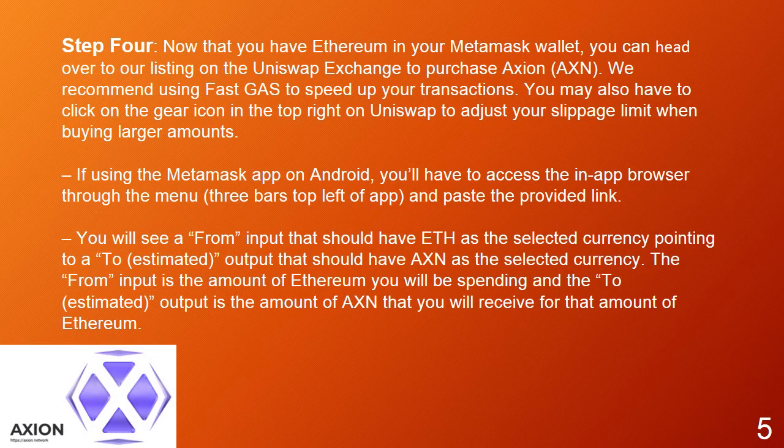Step 4: Now that you have Ethereum in your Metamask wallet, you can head over to our listing on the Uniswap exchange to purchase Axion. We recommend using FastGas to speed up your transactions. You may also have to click on the gear icon in the top right on Uniswap to adjust your slippage limit when buying larger amounts. If using the Metamask app on Android, you'll have to access the in-app browser through the menu — three bars top left of app — and paste the provided link. You will see a 'from' input with ETH as the selected currency, and an estimated output with AXN as the selected currency. The from input is the amount of Ethereum you will be spending, and the estimated output is the amount of AXN you will receive for that amount of Ethereum.